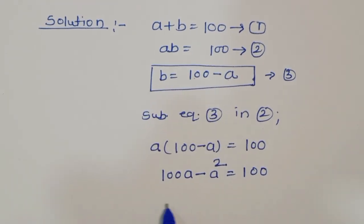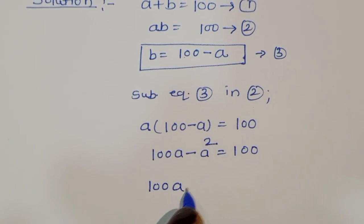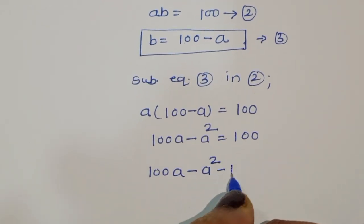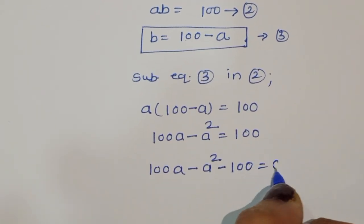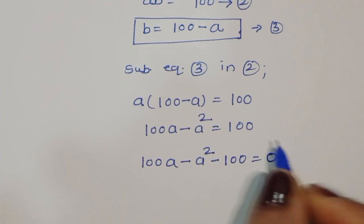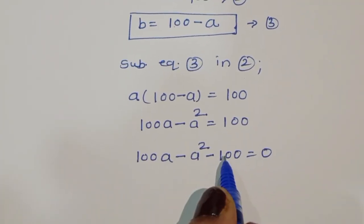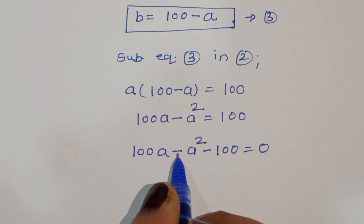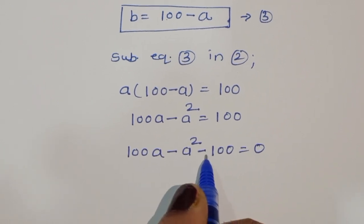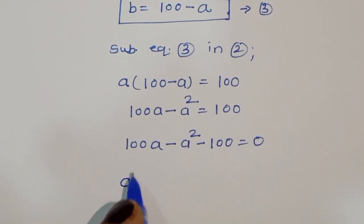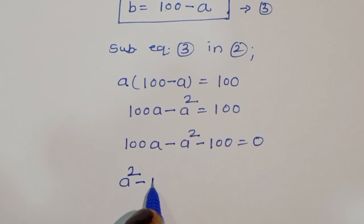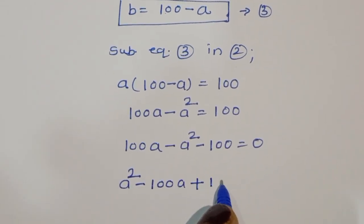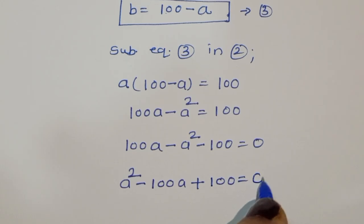We can write this as 100a minus a squared minus 100 equals 0. Multiplying through by minus one, the signs flip, giving us a squared minus 100a plus 100 equals 0.